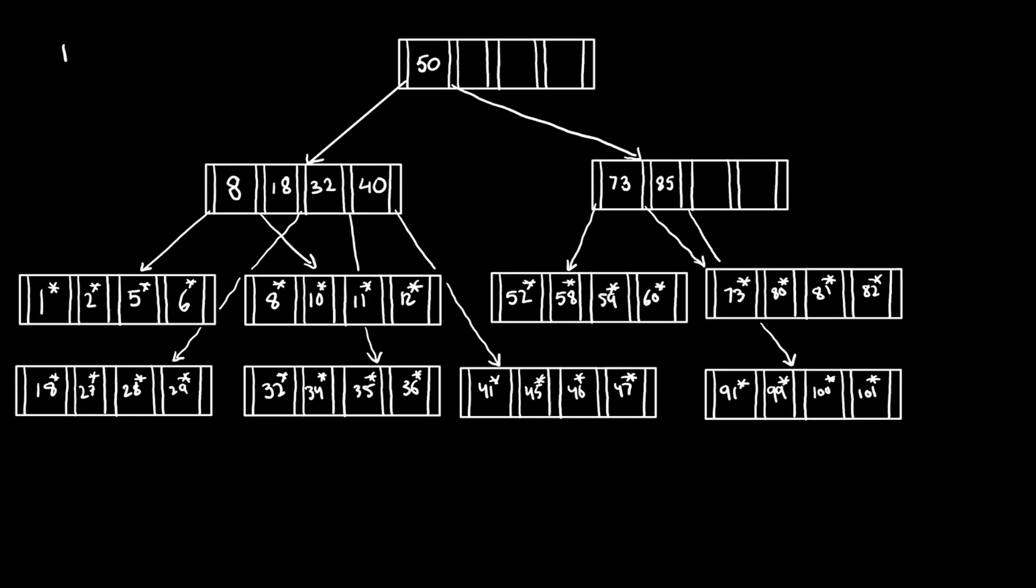Let's look at a more complicated example now. Consider this new tree. We want to insert 61. Traversing down the tree same as before, we find that the data entries are full.